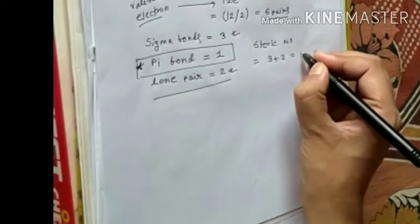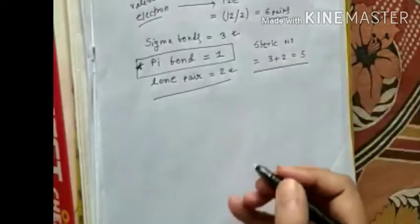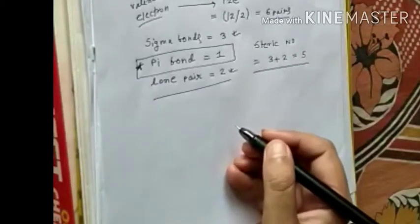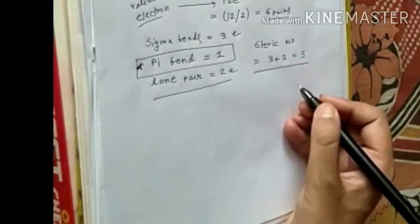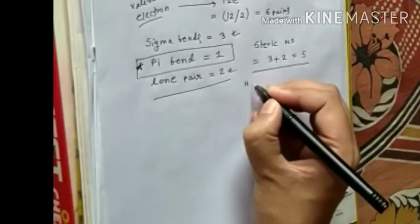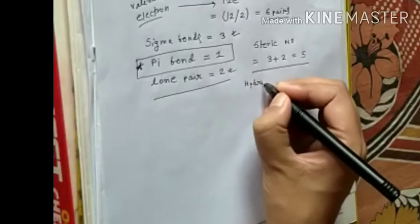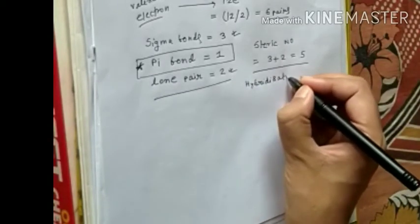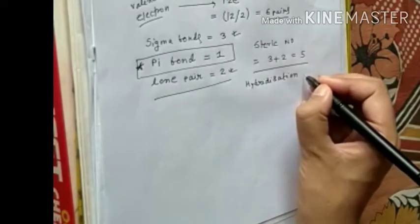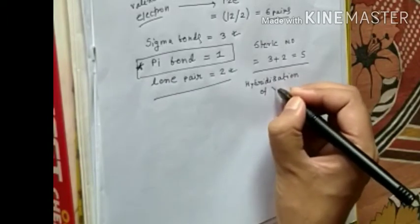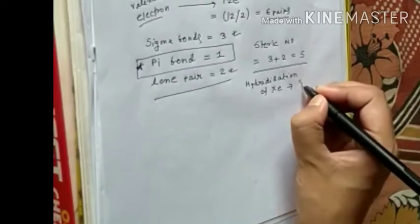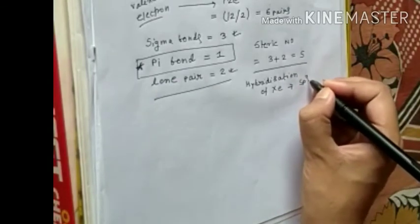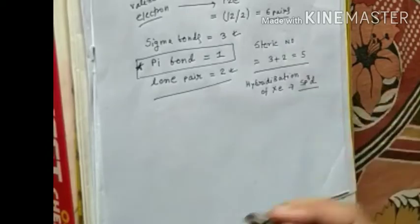Steric number equals 5. So if the steric number equals 5, then the hybridization will be SP3D. This is the hybridization of xenon in XCOF2.